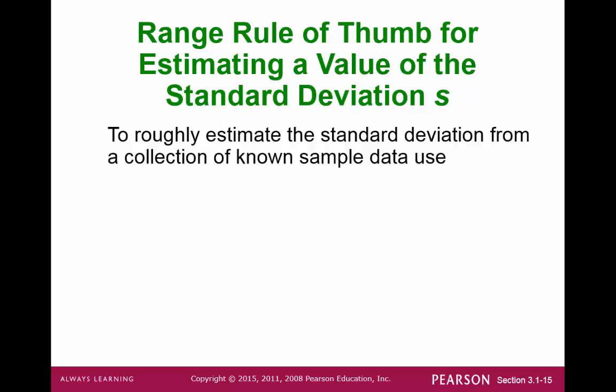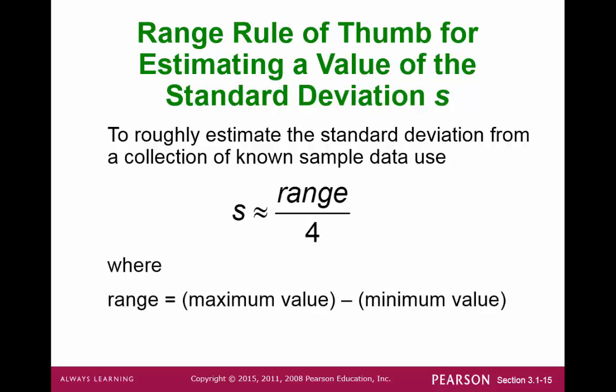If we don't know the standard deviation, we can estimate it. We can imagine the data being split into four major parts. The range gives us the overall distance from smallest to largest value in our dataset, then we divide it by four.